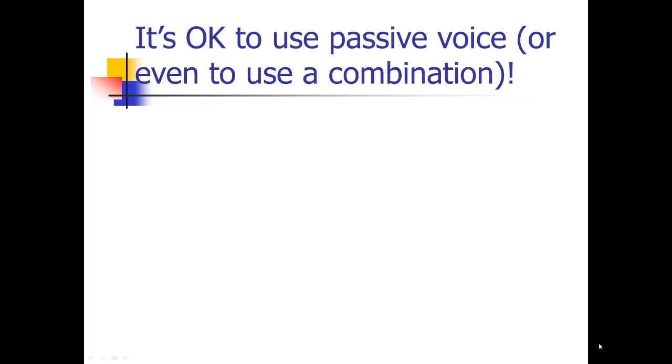All right. So, the other thing I'm going to tell you about verbs in the method section—I've been admonishing you about the use of passive verbs, but now I'm going to tell you that for the method section, it's actually okay to use the passive voice or even to use a combination to go back and forth between passive and active voice. As long as it's not too jarring on the reader, it's fine to do that.